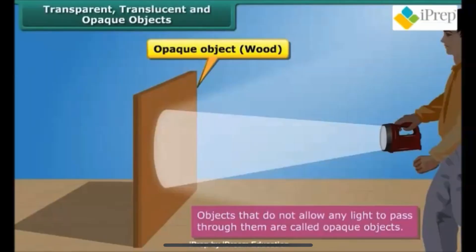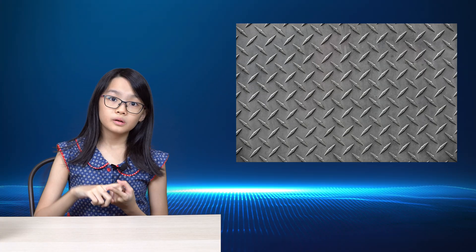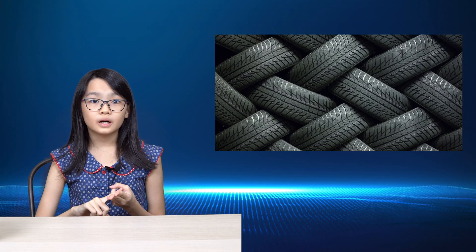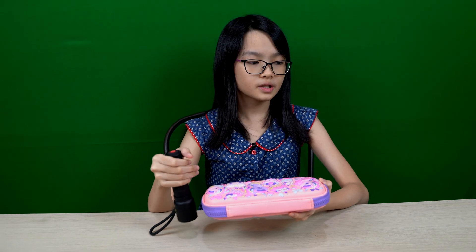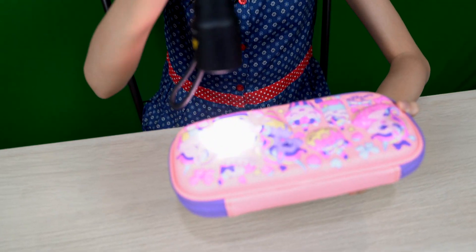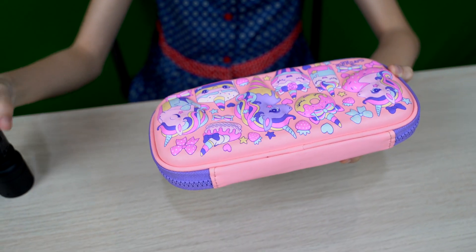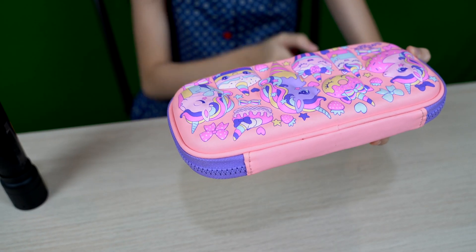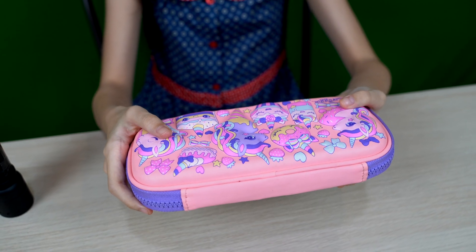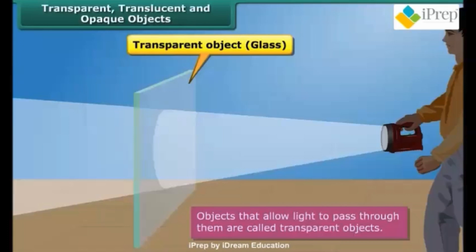An opaque object is an object that does not allow light to pass through, such as metal, wood, rubber, and many more. As you can see, when we point the torch light to the pencil case, the light does not pass through the object and casts dark shadows.